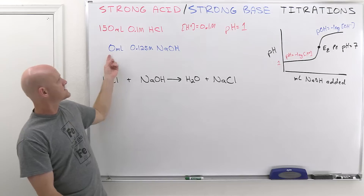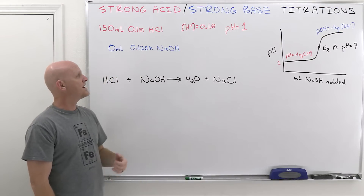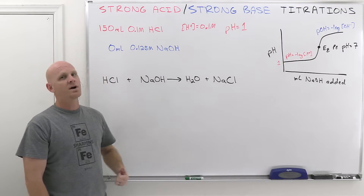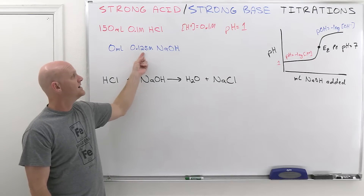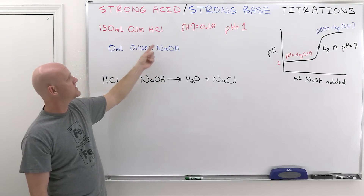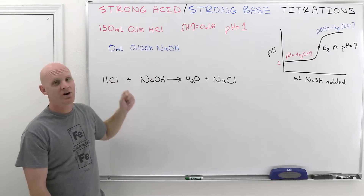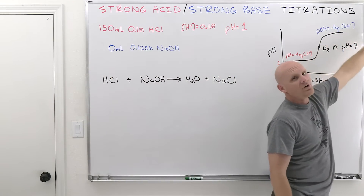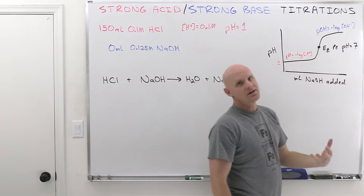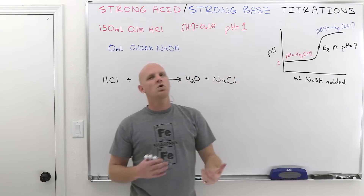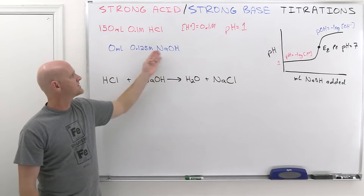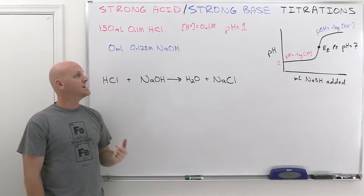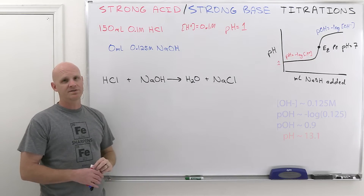On the other end of the curve, you're going to asymptotically approach the pH of what just the basic solution would be. With 0.125 molar NaOH, you'll never actually reach a hydroxide concentration that high because a lot of it gets neutralized by HCl. But if you kept adding NaOH in large amounts, the hydroxide concentration would approach 0.125 for all practical purposes.